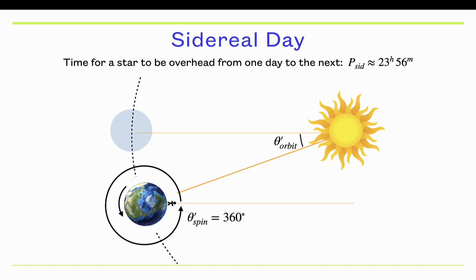On the other hand, a sidereal day is defined as the amount of time it takes for a star to appear directly overhead one day and then directly overhead on the next day. It turns out that's slightly different than for the Sun, because you don't have to wait quite as long for a star that's off in this direction to be overhead. A sidereal day is defined as the Earth rotating through exactly 360 degrees. You don't wait that little bit extra for the Sun to be overhead.